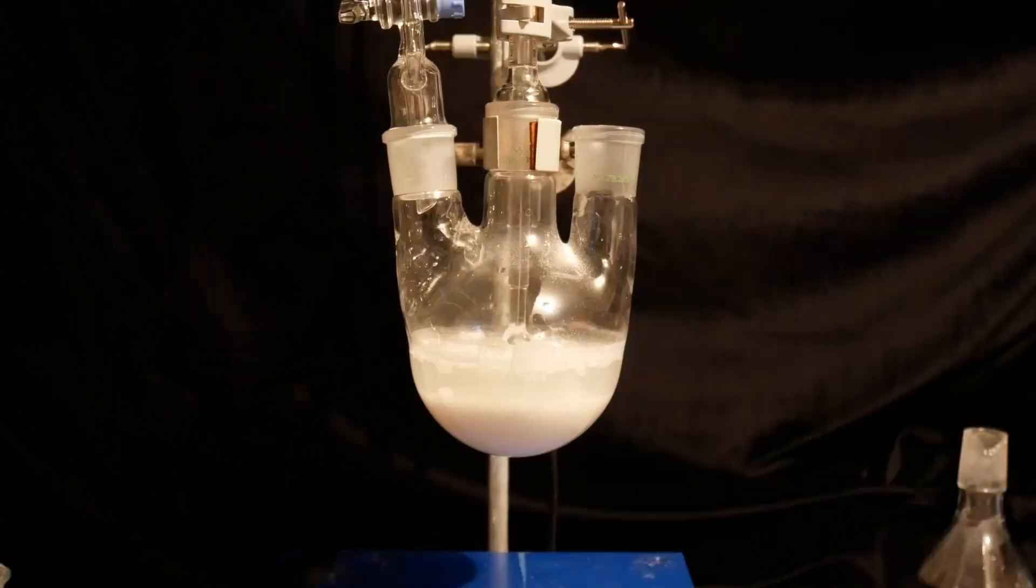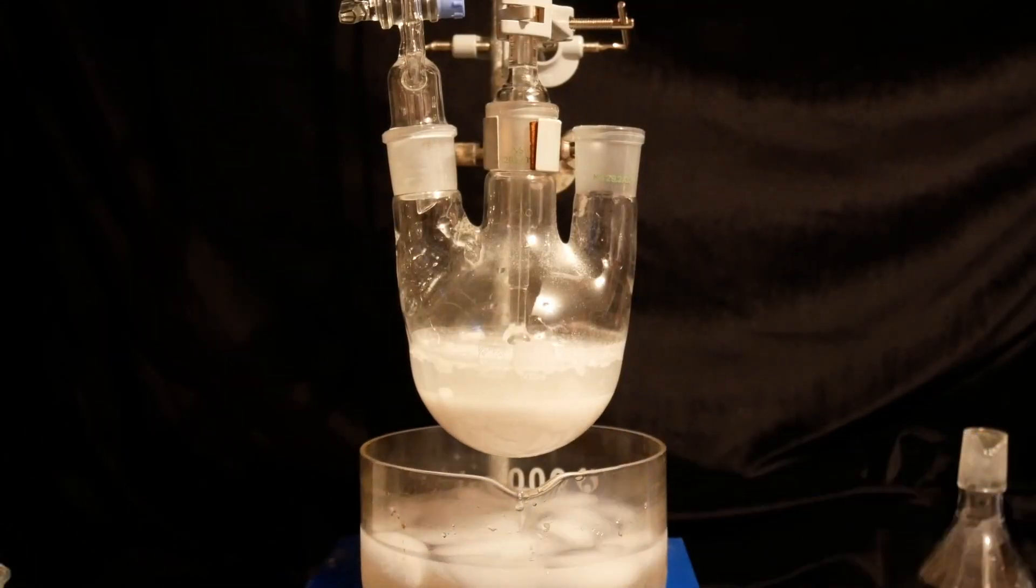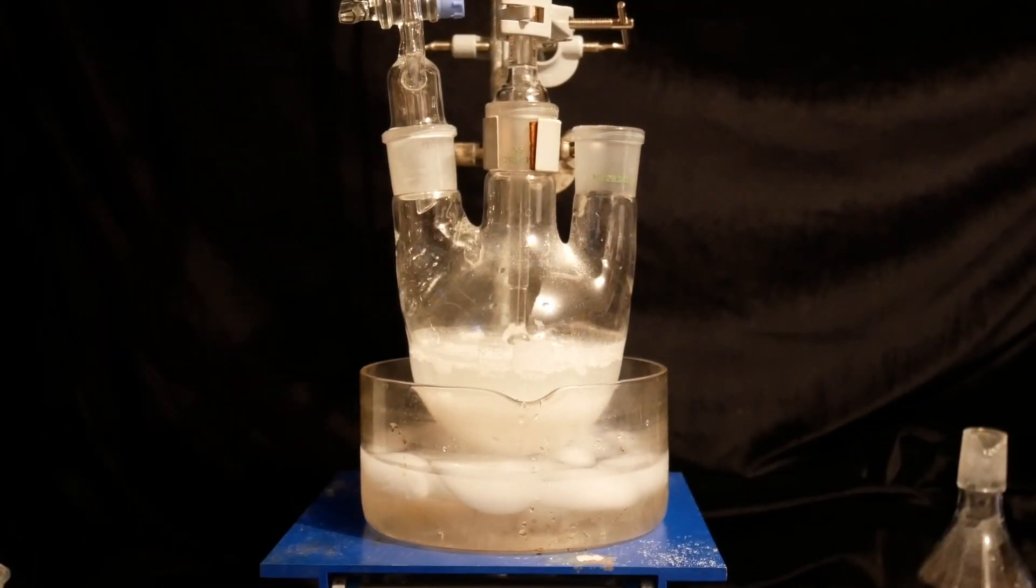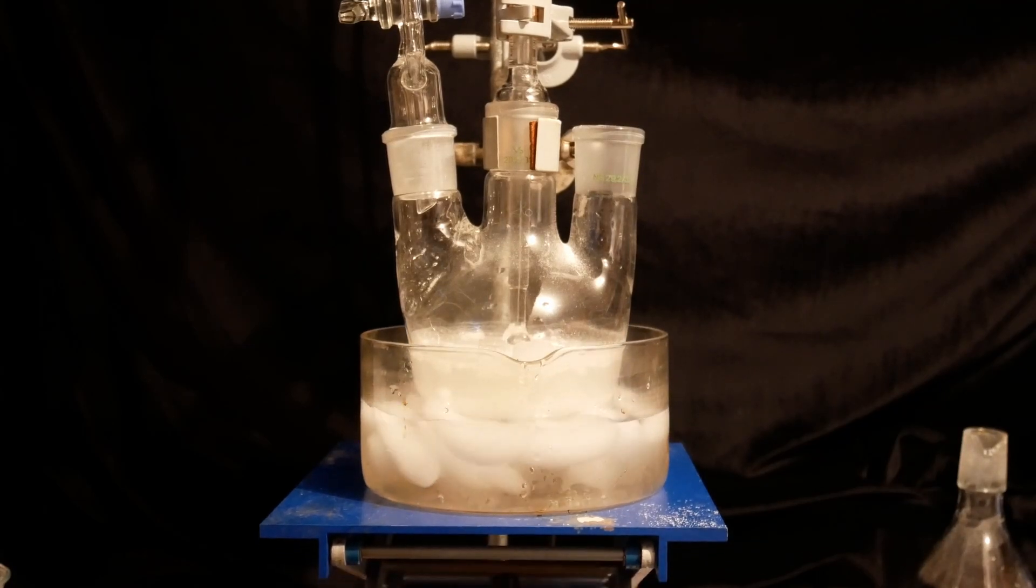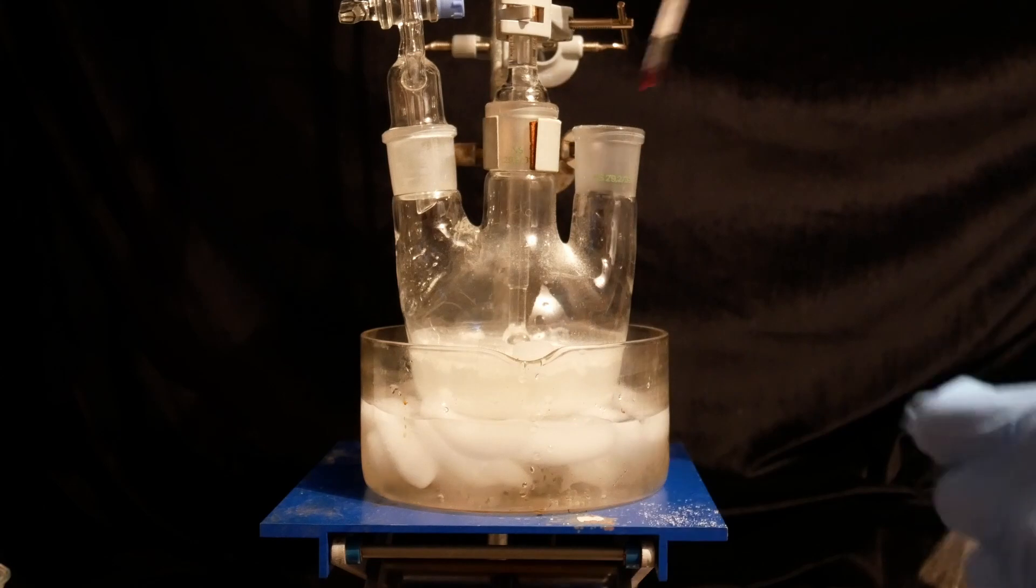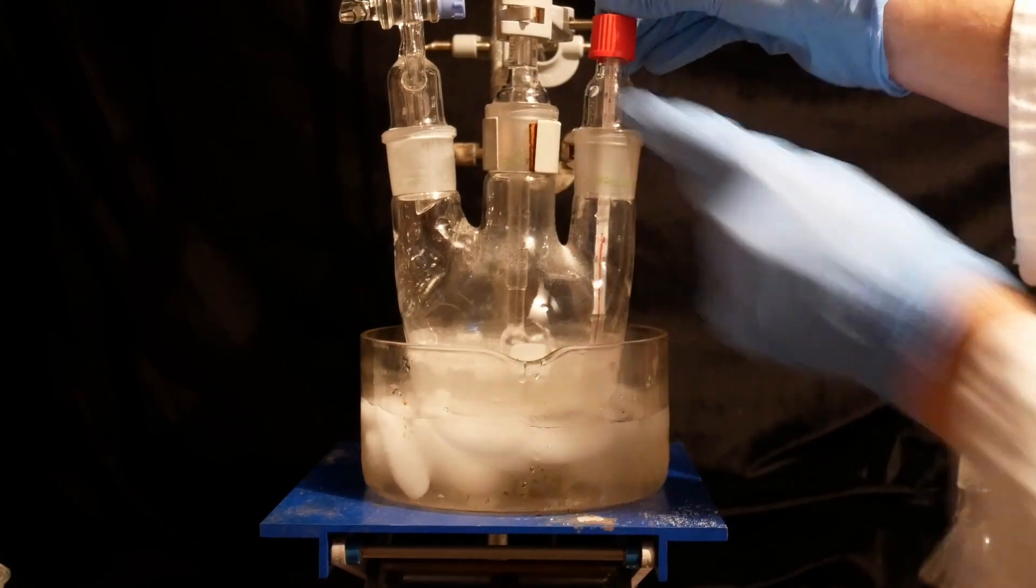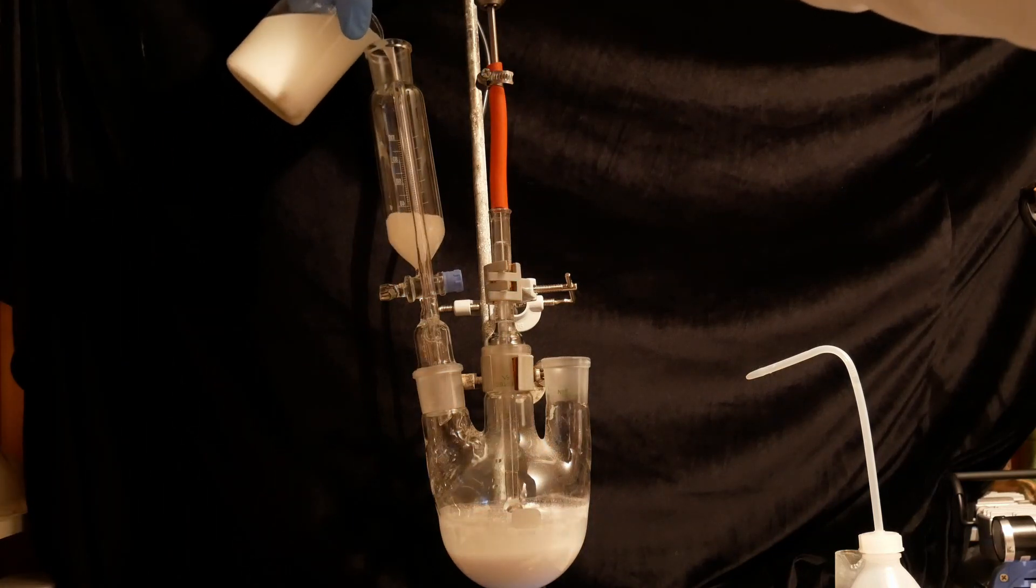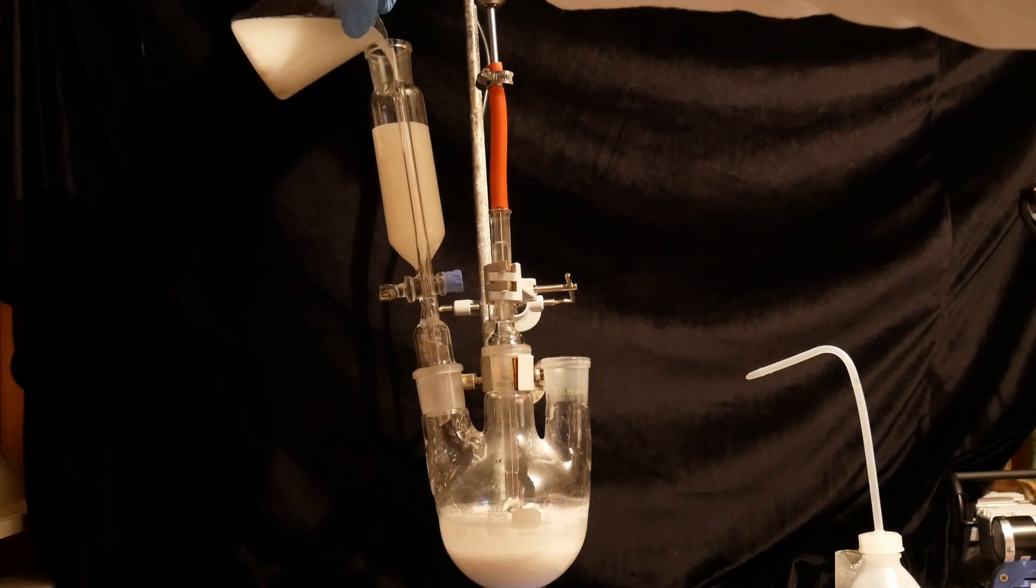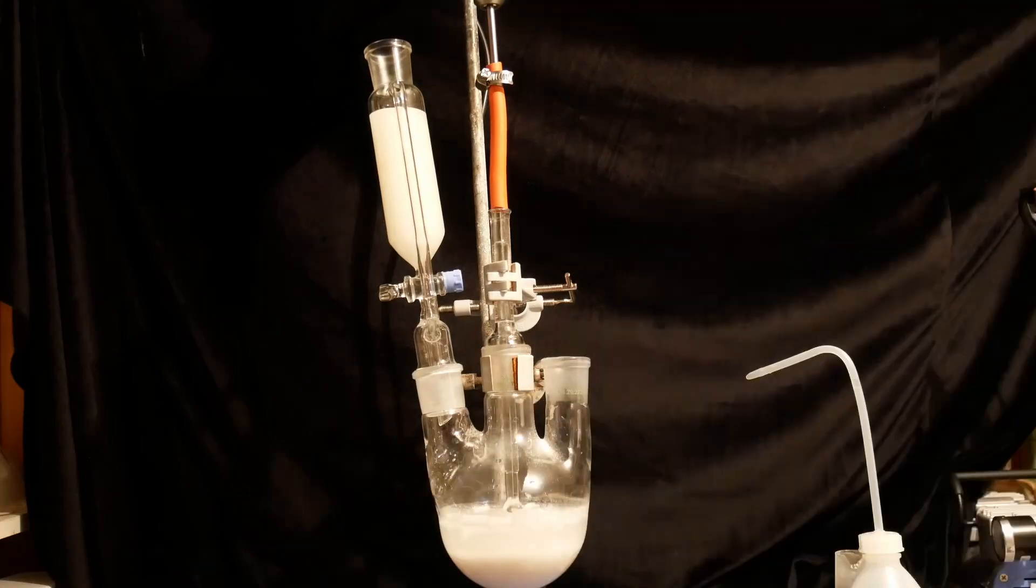An ice bath is placed below the flask, as the addition of the hypochlorite is quite exothermic. The reaction temperature should be maintained between 0 and 10 degrees Celsius for this step. The hypochlorite solution is placed in an addition funnel above the flask, and with medium stirring, the hypochlorite is added into the reaction mixture.